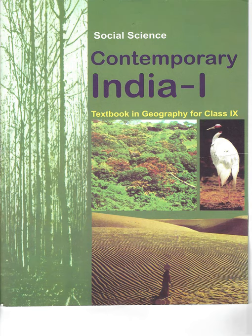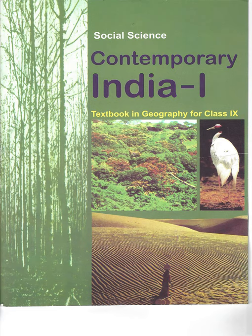The largest part of the northern plain is formed of older alluvium. It lies above the flood plains of the river and presents a terrace-like feature. This part is known as Bhangar. The soil in this region contains calcareous deposits known as kankar. The newer, younger deposits of the flood plains are called Khadar. They are renewed almost every year, so are fertile — ideal for extensive agriculture.